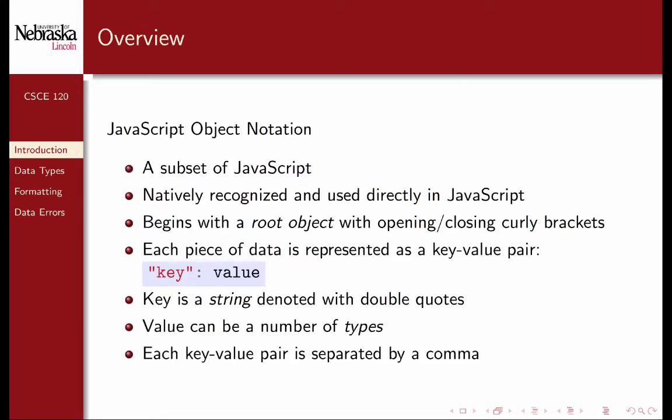JavaScript Object Notation is a subset of JavaScript, so it can be natively recognized and used directly in the JavaScript programming language. JSON data begins with a root object, denoted with opening and closing curly brackets. Each piece of data is represented as a key-value pair. The key is a string, denoted with double quotes. The value can be any number of types that we'll look at shortly. The key and the value are separated by a single colon, and each key-value pair is separated by a comma.